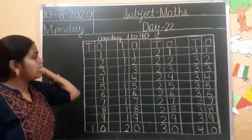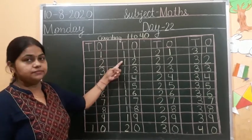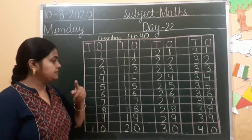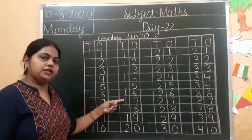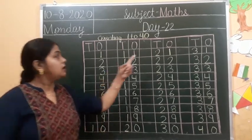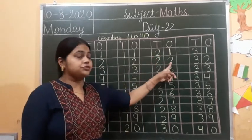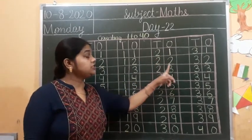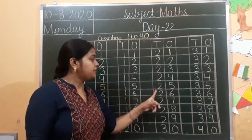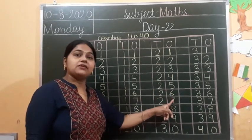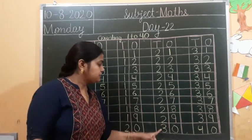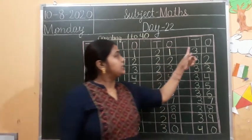11, 12, 13, 14, 15, 16, 17, 18, 19, 20, 21, 22, 23, 24, 25, 26, 27, 28, 29, 30. 31.